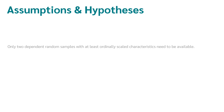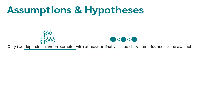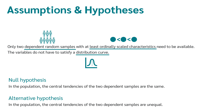Now we go to the assumptions and the hypotheses. In the Wilcoxon test, only two dependent random samples with at least ordinally scaled characteristics need to be present. The variables do not have to satisfy a distribution curve. However, the distribution shape of the differences of the two dependent samples should be approximately symmetric. The null hypothesis is that there is no difference in the central tendency of the two samples in the population. The alternative hypothesis is that there is a difference in the central tendency, meaning the two dependent groups are different.